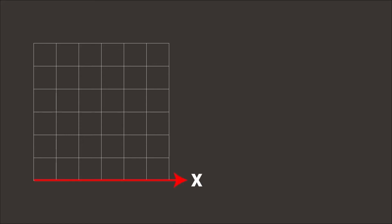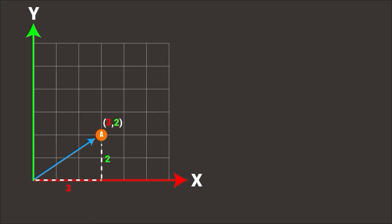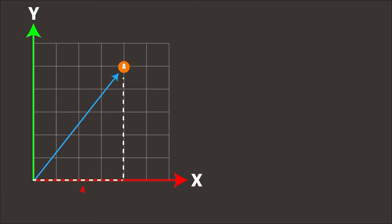Vector has two components: x-axis and y-axis. Let's examine the vector from 0 to point A: 3 units x-axis and 2 units y-axis. Let's look at another example: x-axis 4 units and y-axis 5 units.